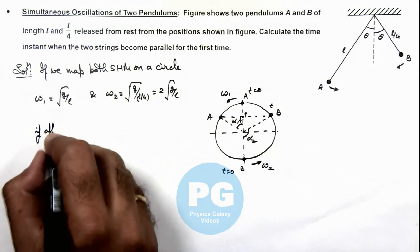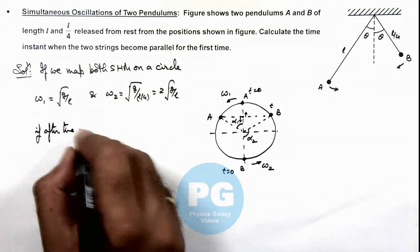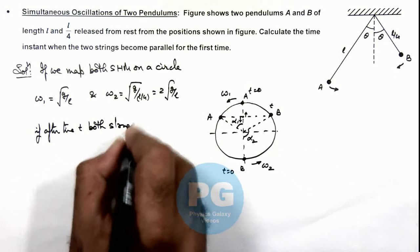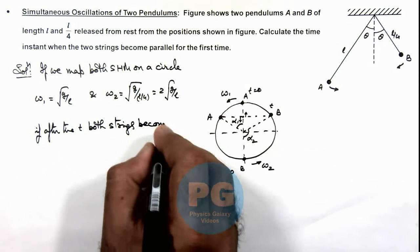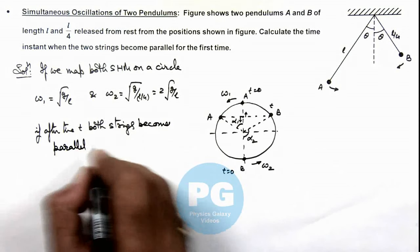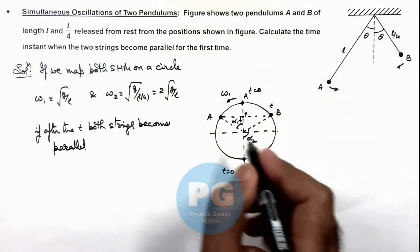If after time t both strings become parallel when the two pendulums would be crossing each other.